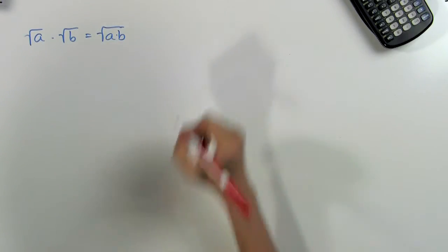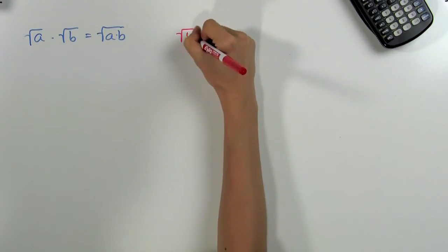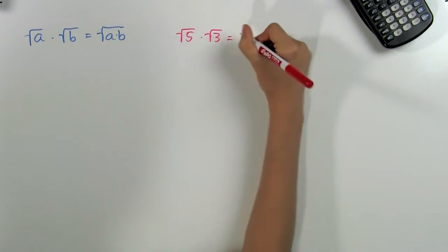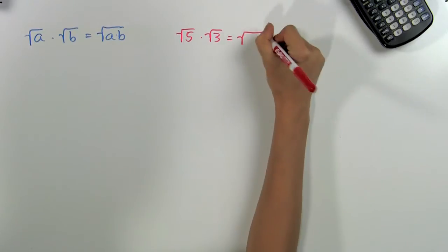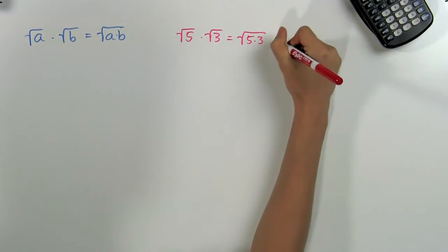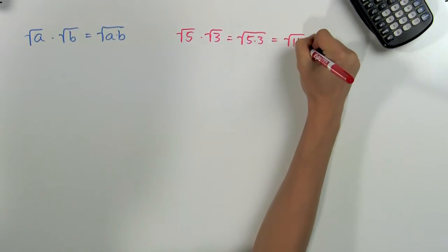For example, this means that the square root of 5 times the square root of 3 is equal to the square root of 5 times 3, or the square root of 15.